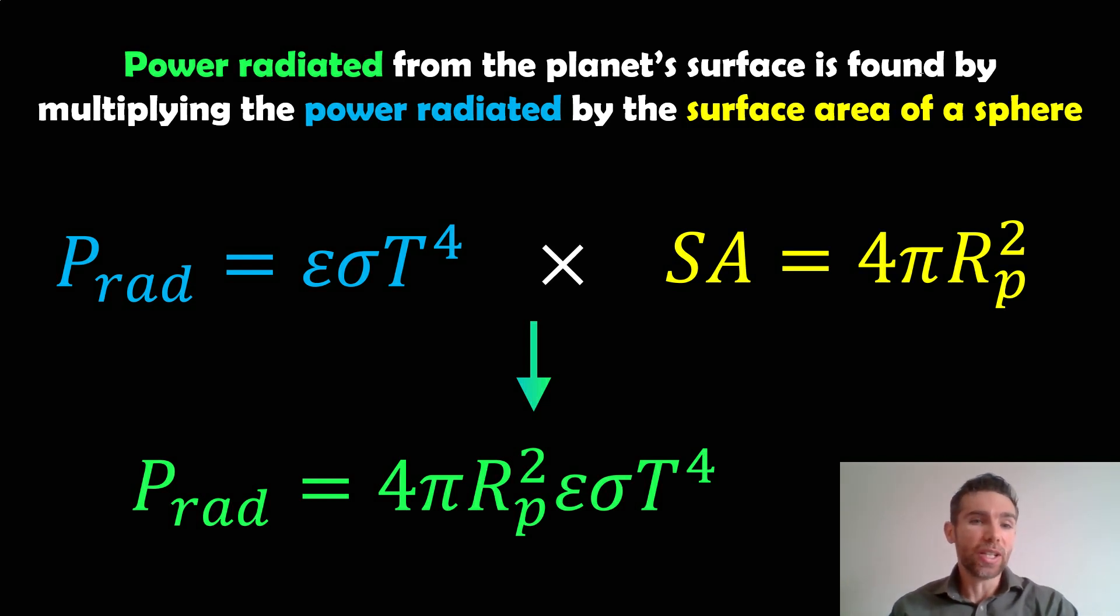So the actual power radiated from the planet's surface is found by multiplying the power radiated by the surface area of the sphere. That gave us per meter squared. We actually want it for the entire surface of the planet. SA is the surface area of a sphere, which is 4π times the radius of that sphere squared. We multiply those together to give us our total power radiated from the surface of the planet. We've got 4π, radius of the planet squared, emissivity, Stefan-Boltzmann constant, and the temperature to the fourth power.